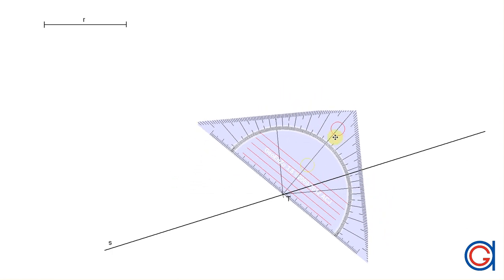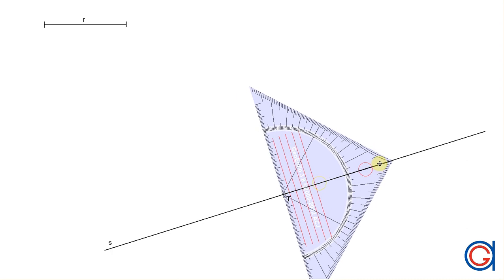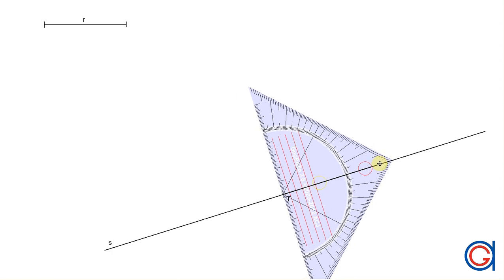So the first thing that we are going to do is with our set square construct a perpendicular line from tangent point t at 90 degrees as shown here.